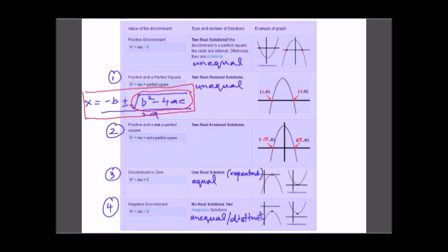Basically there are four cases. The first case is when the discriminant is greater than zero — we have two sub-cases. First, where b squared minus 4ac is a perfect square. Second, where b squared minus 4ac is not a perfect square. If b squared minus 4ac is a perfect square, the roots will be real, rational, and unequal.